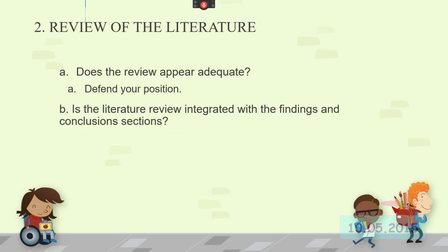The review of the literature. There's usually a section called the literature review in a paper. Sometimes it will be called background. So look for that. Does it appear adequate? And defend your position. Adequacy often means that there's an ample amount of literature being cited. Ample. It's going to depend on the topic and the length and scope of a particular article.